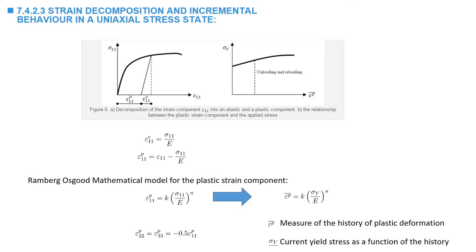As the plastic strains are isochoric, under uniaxial behavior, the plastic strains in the other directions are equal to negative one-half multiplied by the plastic strain in the direction of loading. In other words, if a specimen is permanently elongated, its cross-sectional area decreases — it becomes permanently compressed — such that the total permanent volume change is equal to zero.